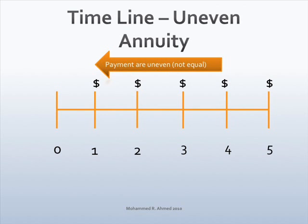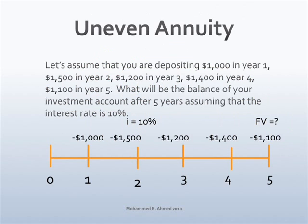Let's look at the timeline of uneven annuity. The payments are not equal and this is an ordinary annuity. Let's assume that you are depositing $1,000 in year one, $1,500 in year two, $1,200 in year three, $1,400 in year four, and $1,100 in year five. What will be the balance of your investment account after five years, assuming that the interest rate is 10%? Draw a timeline for the problem assuming that it is an ordinary uneven annuity. Interest rate is 10% and the question mark is on the right-hand side.